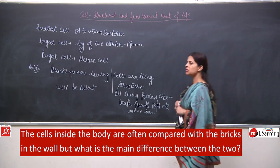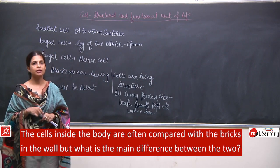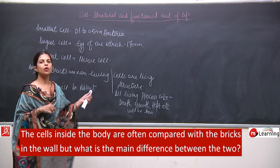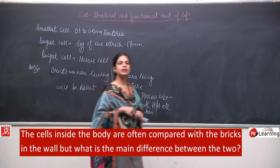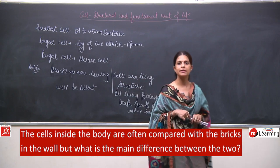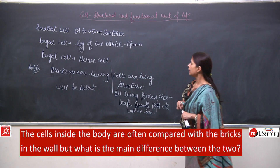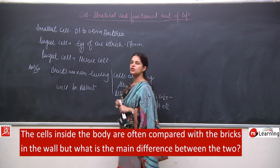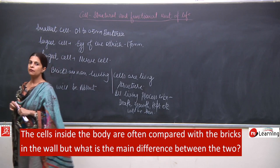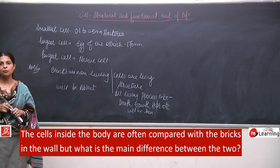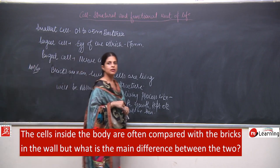The comparison is made in the sense that bricks are the smallest unit of any wall, whereas cells are the smallest part of any living organism. But a living and non-living thing cannot be truly compared in that way.